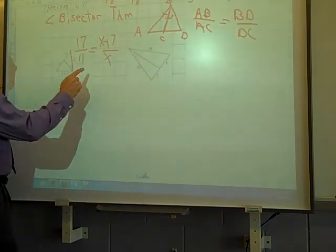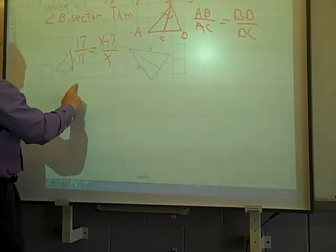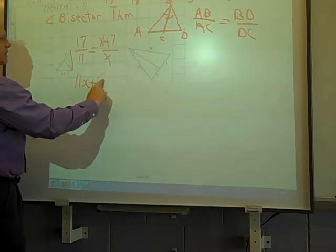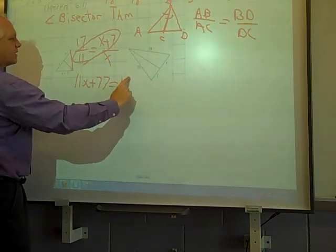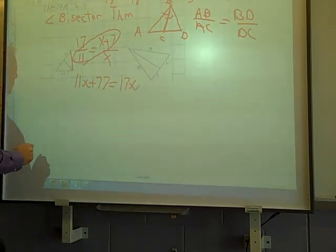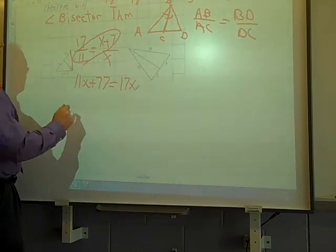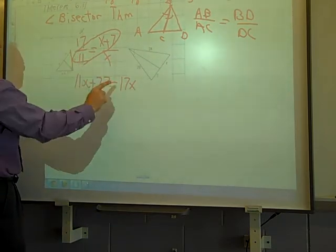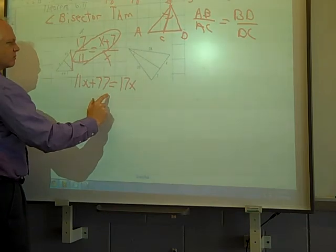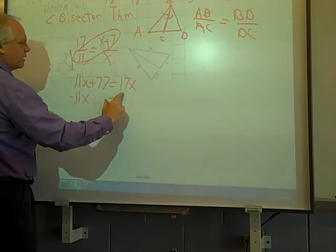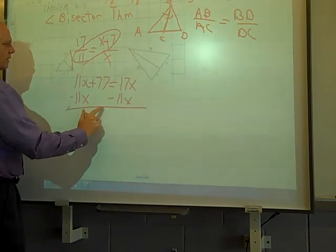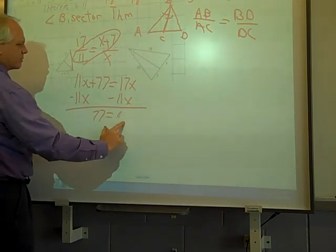I'll solve that. That's 11x plus 77. I'm multiplying these two together. Equals 17x. So I'm going to subtract 11x from both sides, and I'll have 77 equals 6x. Divide by 6 here and here.